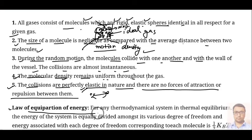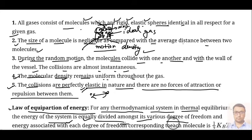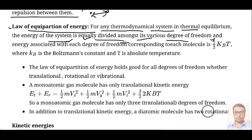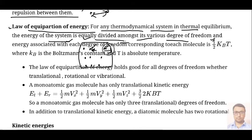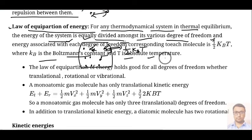After that, we have the law of equipartition of energy. For any thermodynamical system in thermal equilibrium, the energy of the system is equally divided amongst its various degrees of freedom, and the energy associated with each degree of freedom for each molecule is (1/2)K_B T. It says that inside a container, energy is divided equally among every molecule, and for each degree of freedom — the direction in which it can move — the energy is (1/2)K_B T, where K_B is Boltzmann constant and T is absolute temperature.